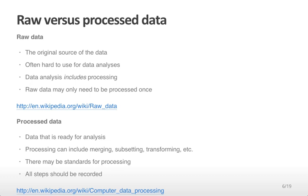Processed data, on the other hand, is data that is ready for analysis. Processing can include merging datasets together, taking subsets of data to make them smaller or to focus on a particular group of objects, transforming the numbers to make them on a more manageable or correct scale, or dealing with missing data or outliers. There may be standards for processing for particular types of data, and those standards are often used over and over again, but all steps should be recorded because you might do something slightly different in the way that you process the data.